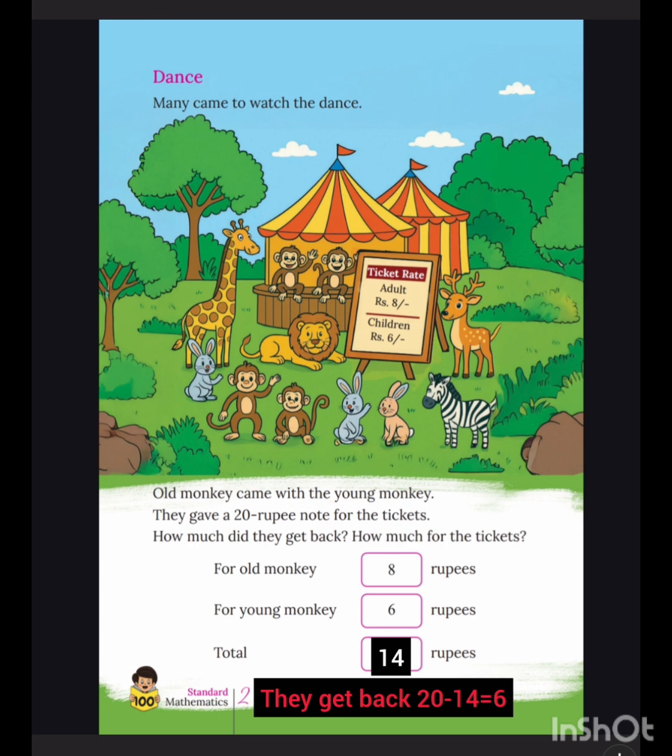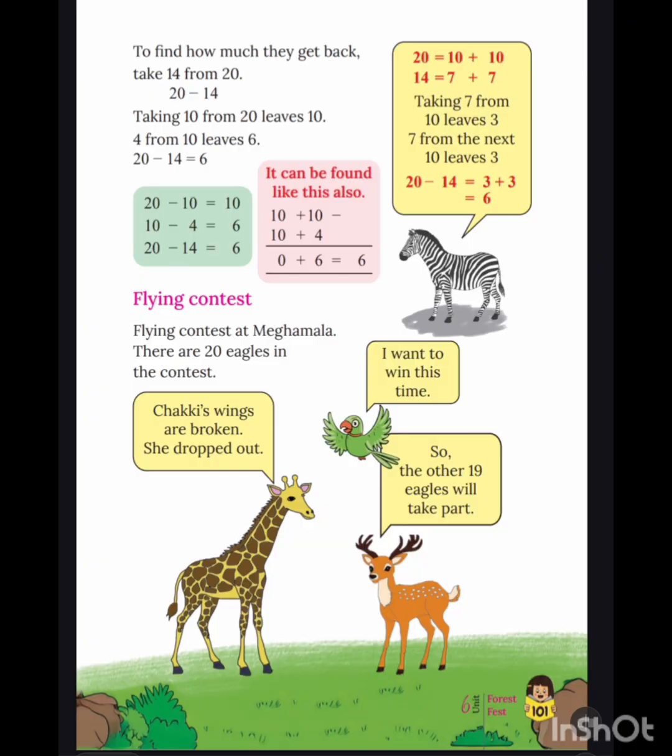20 minus 14 is equal to 6 rupees. Page number 101. To find how much they get back, take 14 from 20. Taking 10 from 20 leaves 10, so 20 minus 14 is equal to 6.